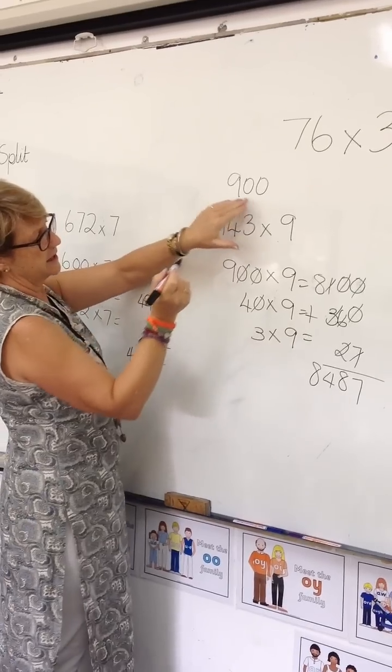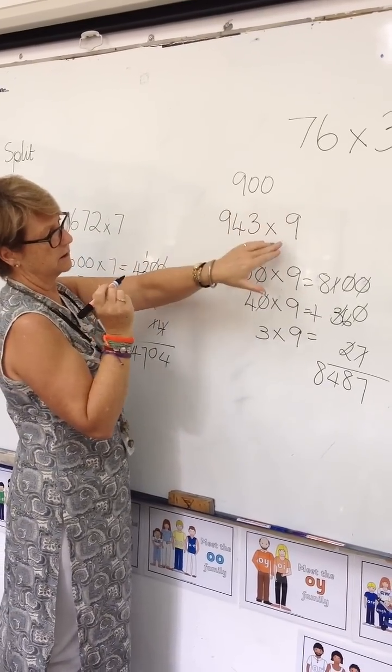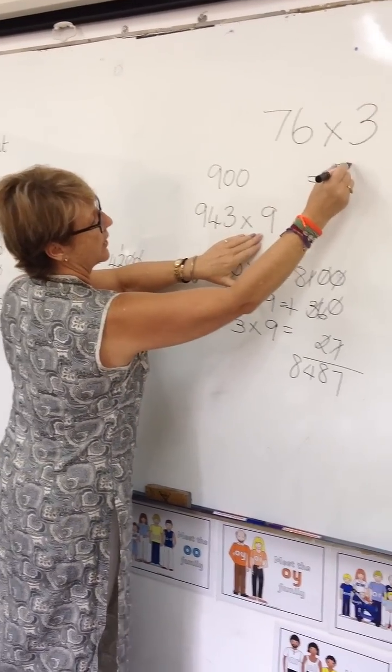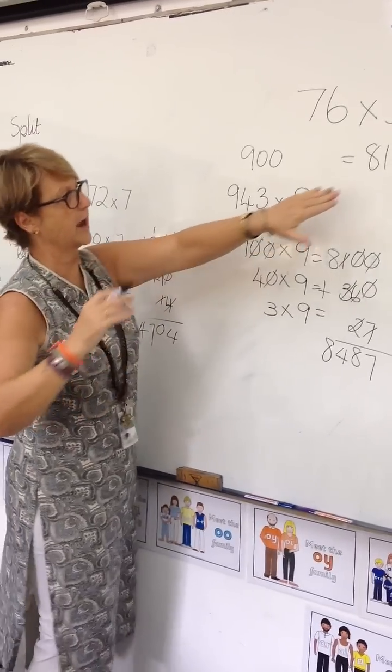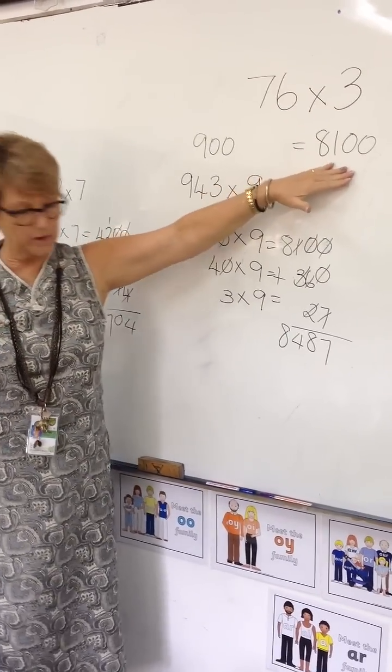What is 9 times 9? 81. So our answer should be around 8,100.